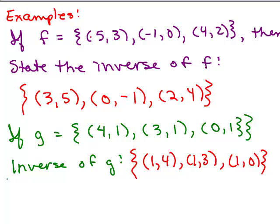Now, look at our first function f — it's a function, and when we look at the inverse of f, we also get a function because for each x value there's exactly one y value. But when we look at g, it's a function, however its inverse is not, because we have 1 appearing as x in more than one ordered pair going to three different values of y. So the inverse of g is not a function.